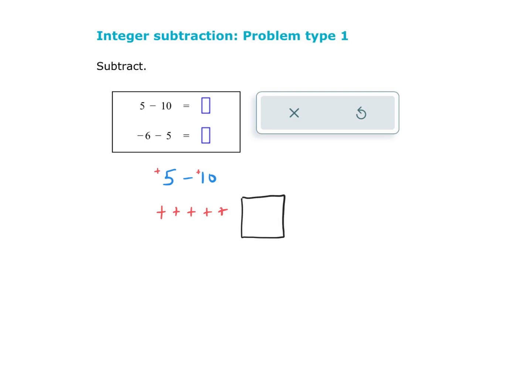I'm going to write in 10 positives and 10 negatives. Now I'm ready to take away the 10 positives. And what I'm left with is 10 negatives in the box. So all together, I really have 5 positives plus 10 negatives. When we're combining opposite signs, we're going to have some canceling out. We take our 10 negatives, get rid of all the positives, and we're left with 5 negatives.